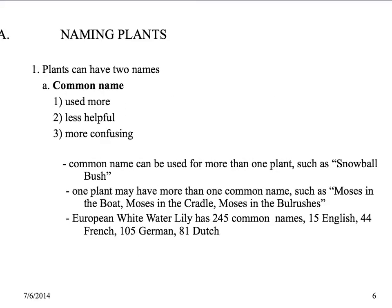Plants basically have two names that you can use. The common name is used more commonly and it has very little to do with the scientific name, although it may be related. It can be confusing because there's almost a lot of slang and common names. You may have one common name that's used for more than one plant. The snowball bush — that common name can be used for viburnums, spirea, any kind of white flowering spring-flowering plant. There are a lot that are called snowball bush.